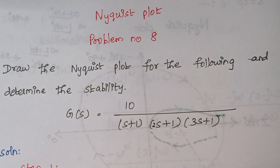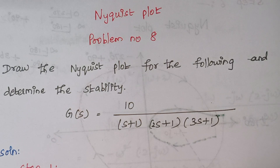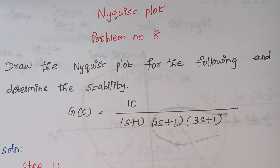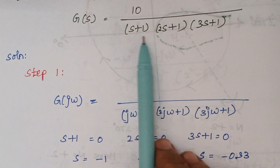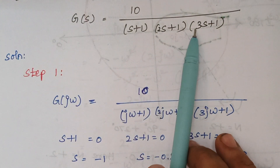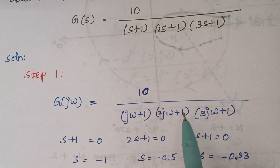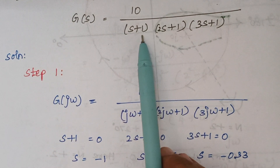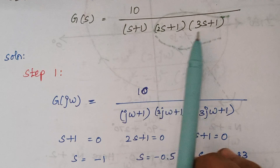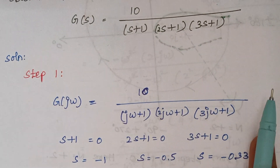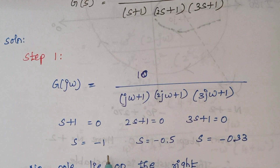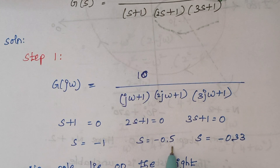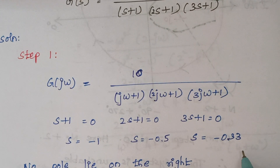we have to find the number of poles which lie on the right hand side of the S plane. The denominator terms are known as poles. So now we are going to find out the values of poles. Here it is (S+1), (2S+1), and (3S+1). We equate these three terms to 0. Once you equate and solve, the value of S is found to be -1, -0.5, and -0.33.